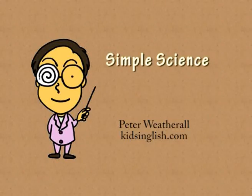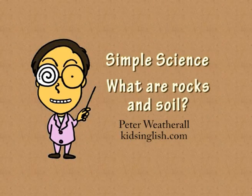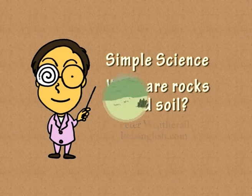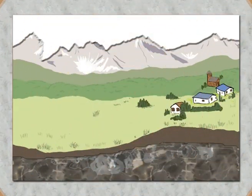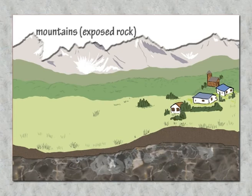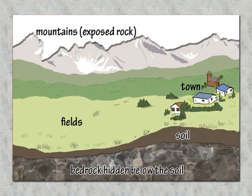Simple Science: What are rocks and soil? Rock is the naturally occurring material that lies beneath all surfaces around us. Sometimes you can see the rock when it is exposed on mountains and cliffs, but more often it is hidden below the surface of fields in the countryside and streets and towns.